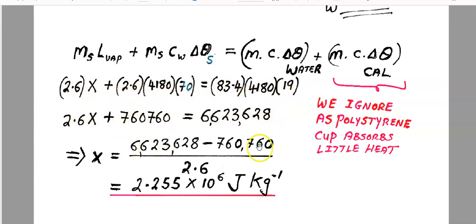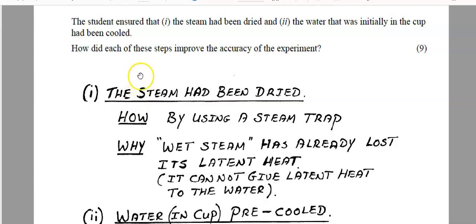The rest is mathematics — use a calculator and work through it. I got a final answer of 2.255 × 10⁶ joules per kilogram. Be very careful about your units: for specific latent heat, it's joules per kilogram because there is no change of temperature.